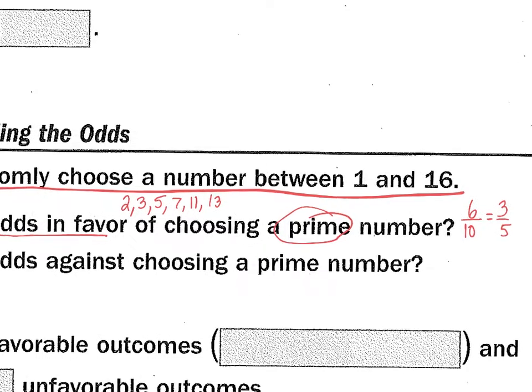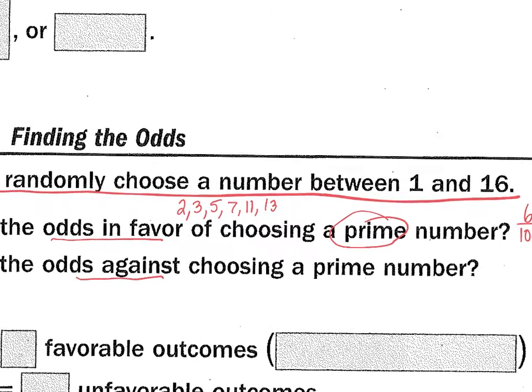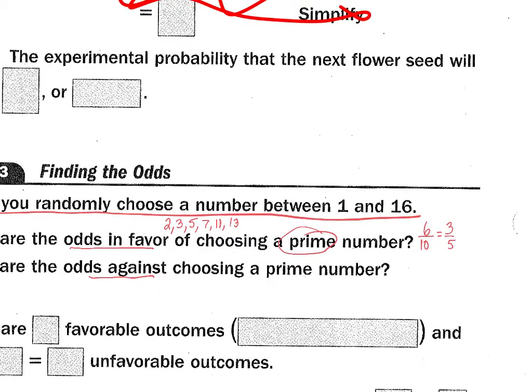The next one says, what are the odds against choosing a prime number? Odds against choosing a prime number. What are all the favorable outcomes? It's unfavorable over favorable. I always put the favorable ones on the bottom first. How many favorable ones are there? Six. How many unfavorable are there? 10. So that reduces to 5 to 3. So the odds against choosing a prime number are 5 to 3. And doesn't that make sense? It should be higher because there are less odds or primes in there.